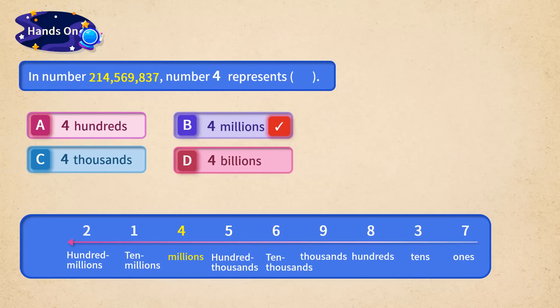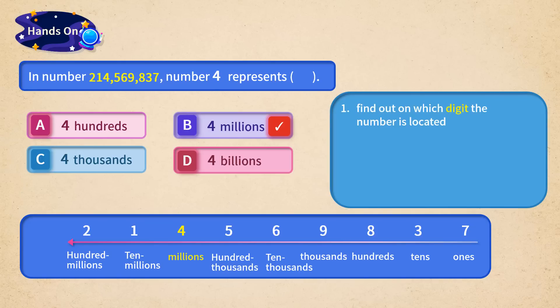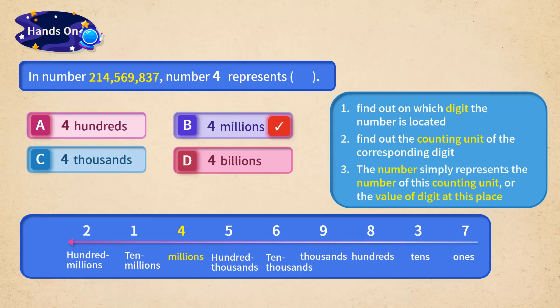To solve this type of problem, we need to divide it into three steps. The first step is to find out which digit the number is located on, and the second step is to find out the counting unit of the corresponding digit. The number simply represents the number of this counting unit, or the value of the digit at this place. Have you got it?